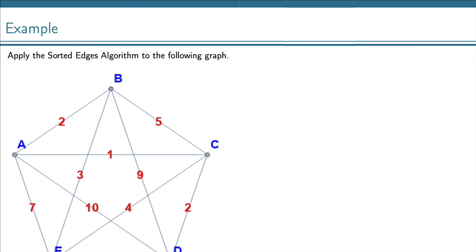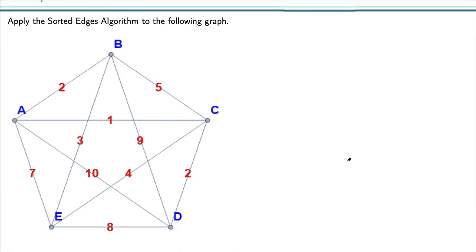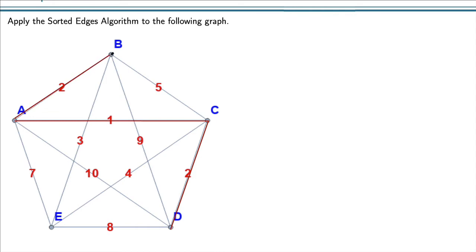Let's do a little more complicated example with some more vertices. We start off with our cheapest edge, which is from A to C. The next cheapest edges are C to D and A to B, both with weight 2. These don't conflict at all — I can add both of them because neither one is going to break my rules of no vertices of degree 3 and no circuits that don't include everything. So I add both of those.